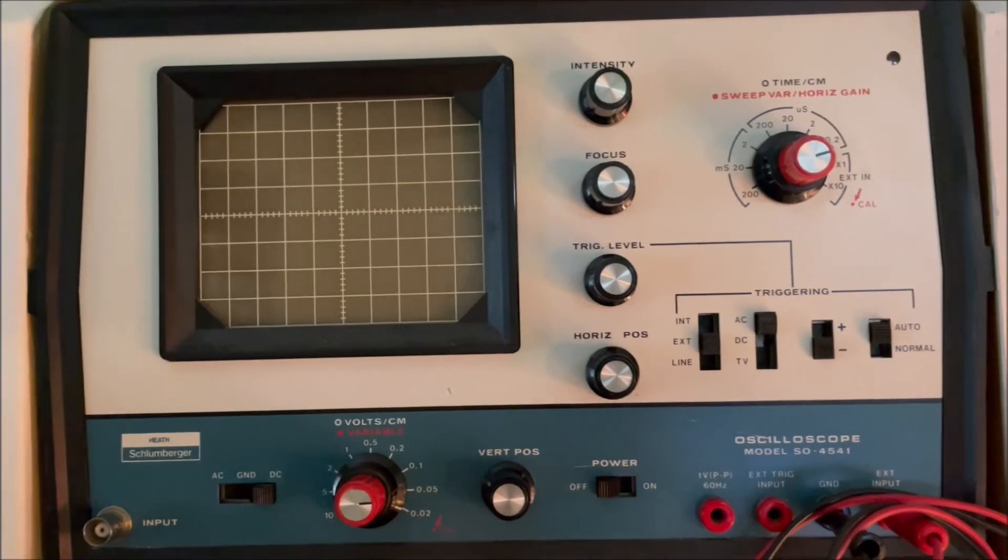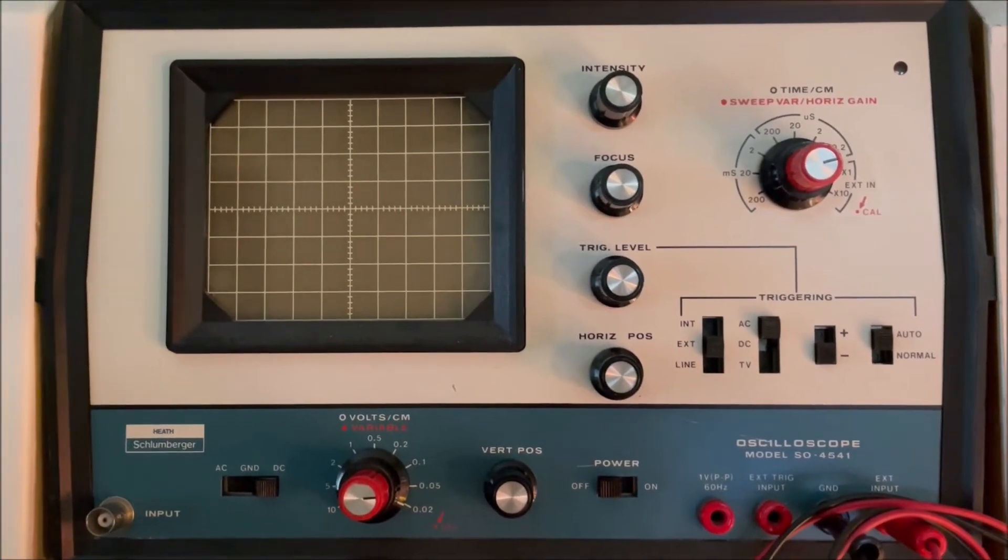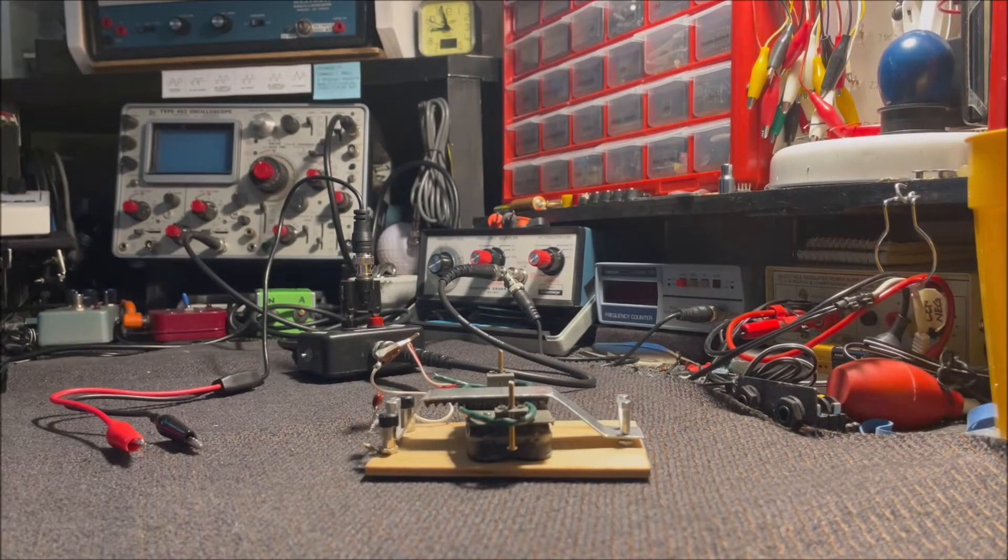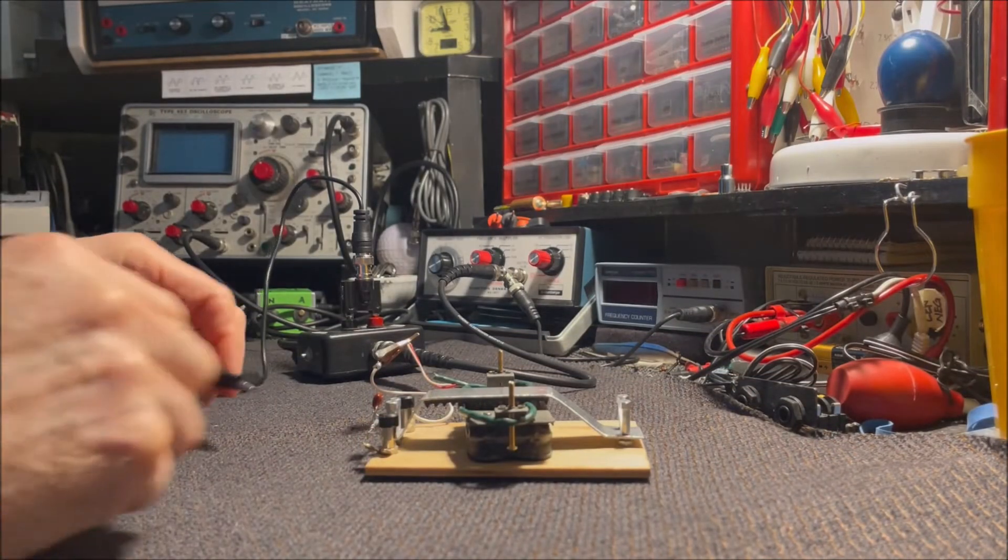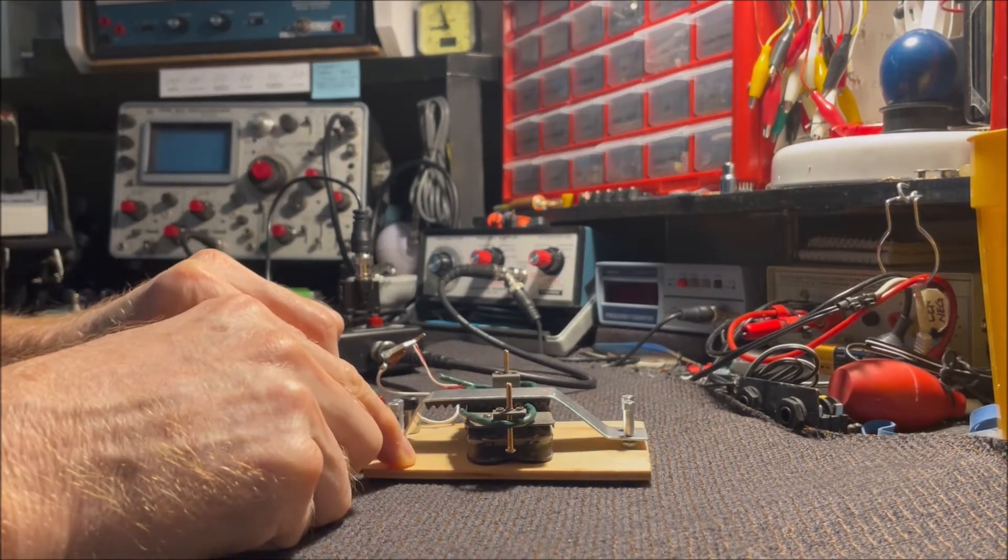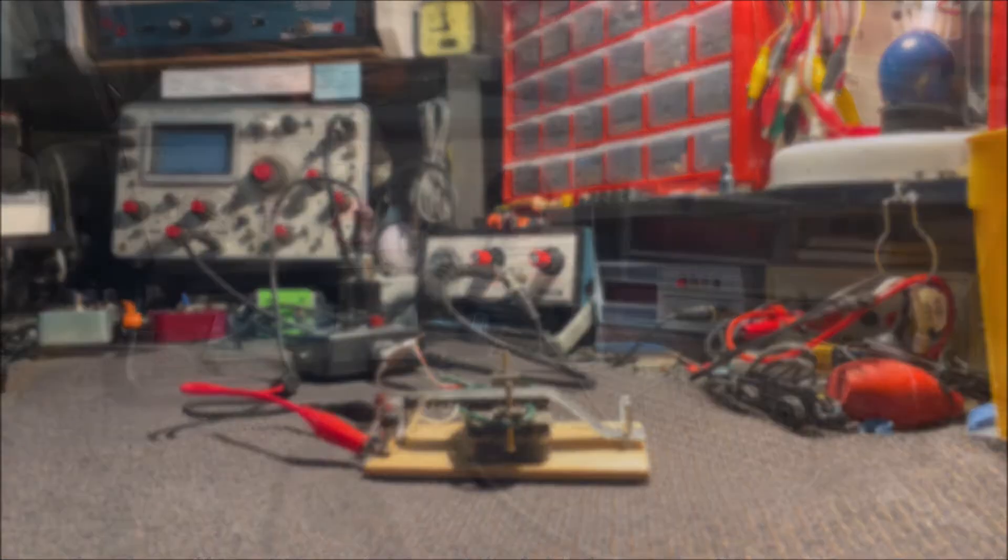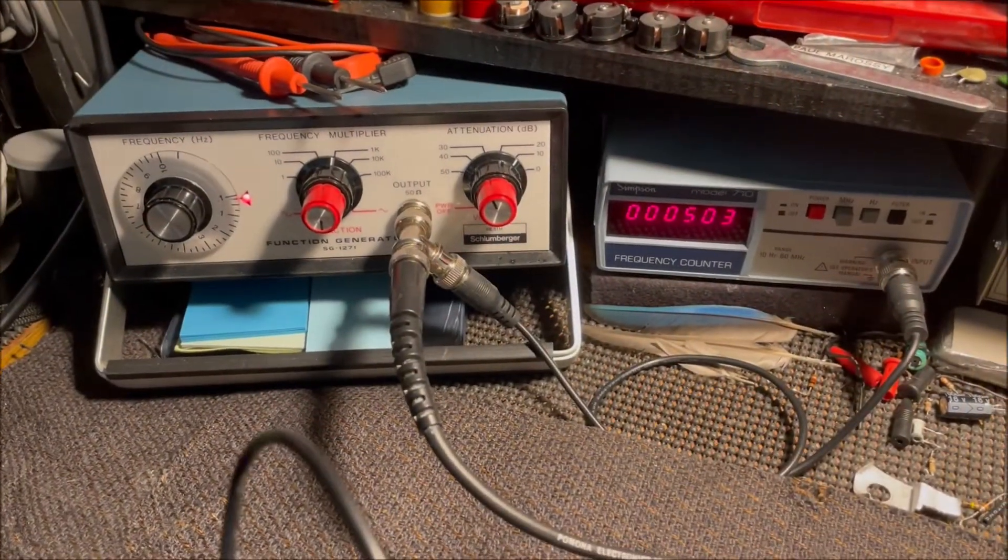This old analog oscilloscope that does XY mode rather well. Using this is very simple. All we have to do is connect these two leads to the tabs on the testing fixture here, and we're ready to turn on our equipment and start testing.